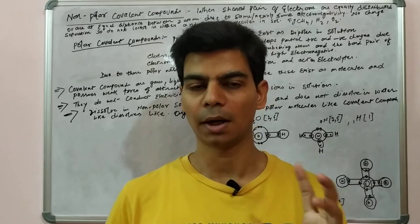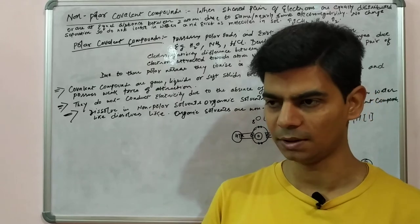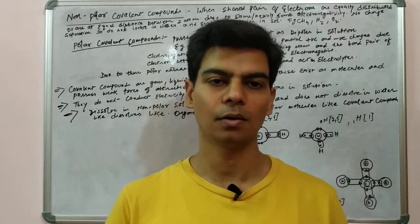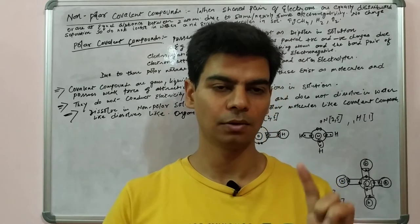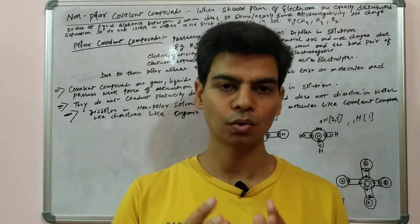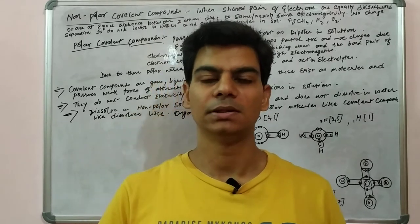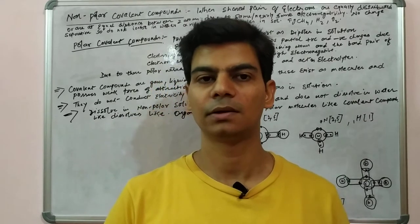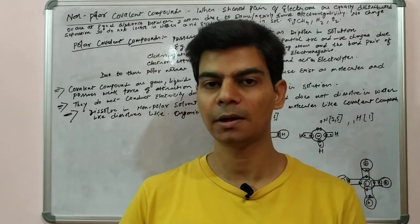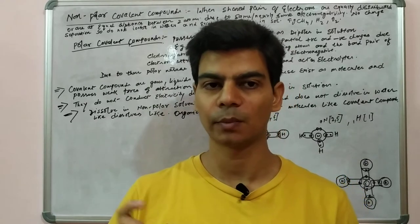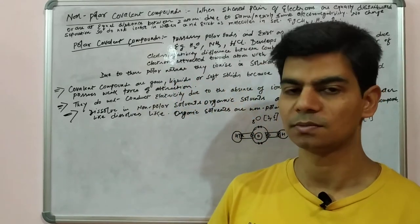Hydrogen shared one electron to complete its outermost shell to two electrons, and chlorine shared one electron to complete its outermost shell to eight electrons. This shared pair of electrons is called the shared pair. In HCl, the chlorine atom with higher electronegativity pulls this shared pair towards itself, so chlorine acquires a delta negative charge and hydrogen acquires a delta positive charge.